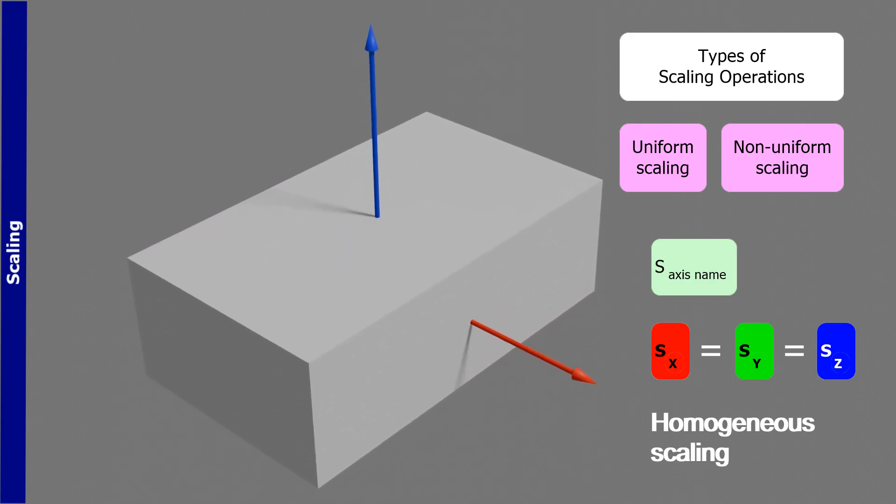If sx, sy, and sz are not equal, it's termed heterogeneous scaling. This means each dimension scales independently.